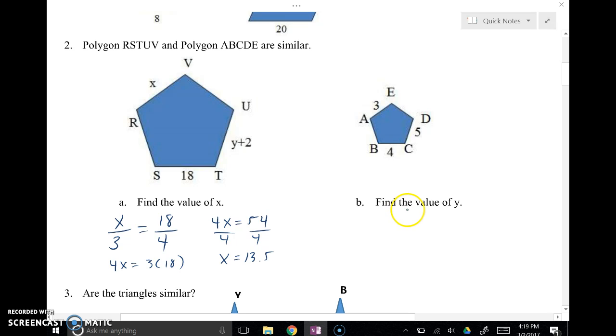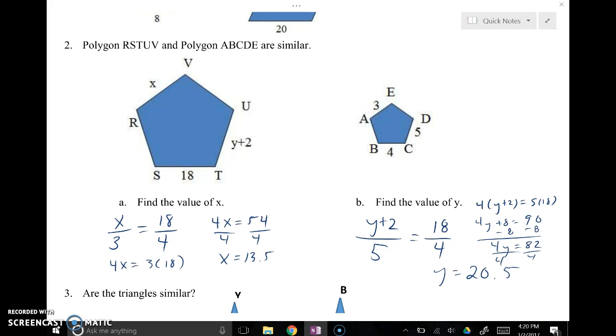So that's what my value of x is. Now I still need to find the value of y, so we're going to do that real quick. Same idea, y plus 2 matches up with this 5. And we're going to use the same scale factor, 18 over 4, because we know it works. So cross multiply, and I get 4 times y plus 2 is equal to 5 times 18. Now 4y plus 8 is equal to 90. Subtract 8, subtract 8. 4y is equal to 82. Divide everything by 4, and y is equal to 20.5.